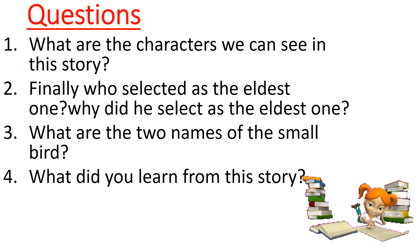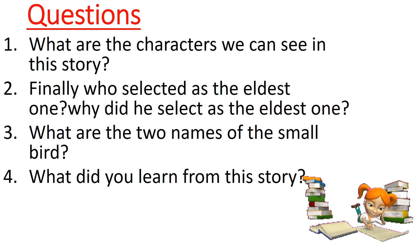Okay children, I think you understood the story. Now you can take your textbook and writing book and write down answers for the following questions. First: What are the characters we can see in this story? Second: Who was selected as the eldest one, and why was he selected as the eldest one? Third: What are the two names of the small bird? Fourth: What did you learn from this story?